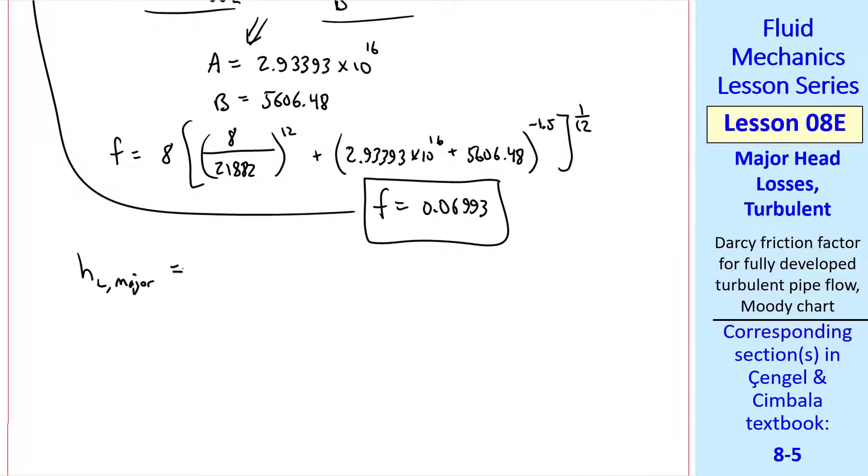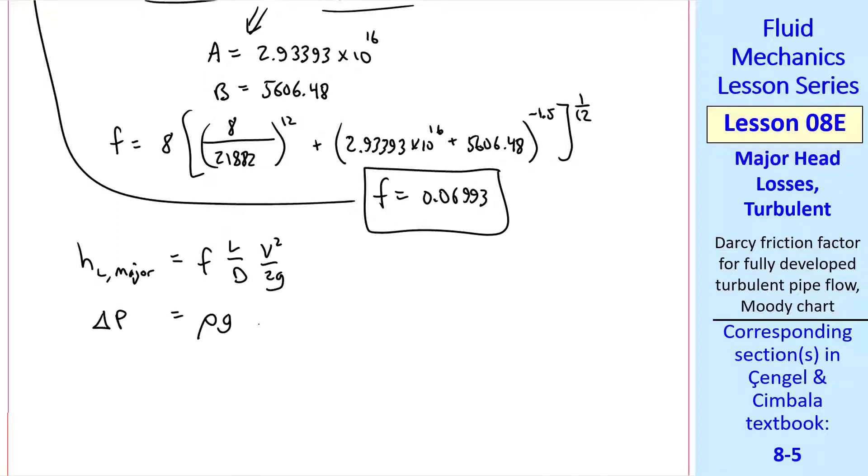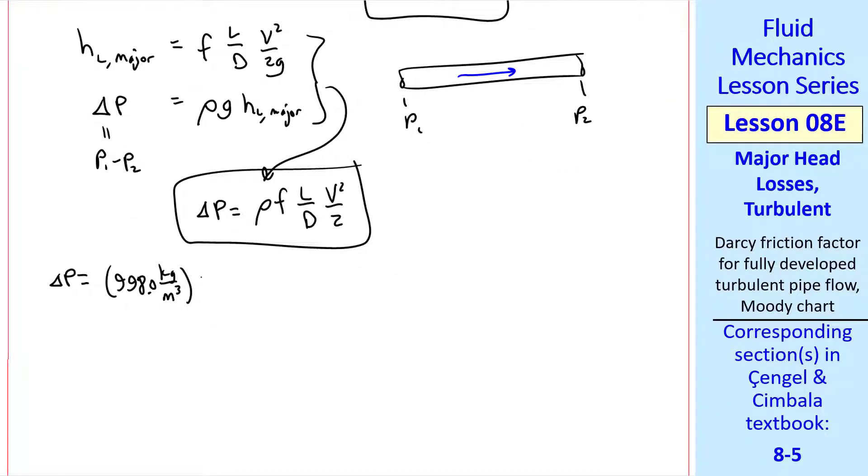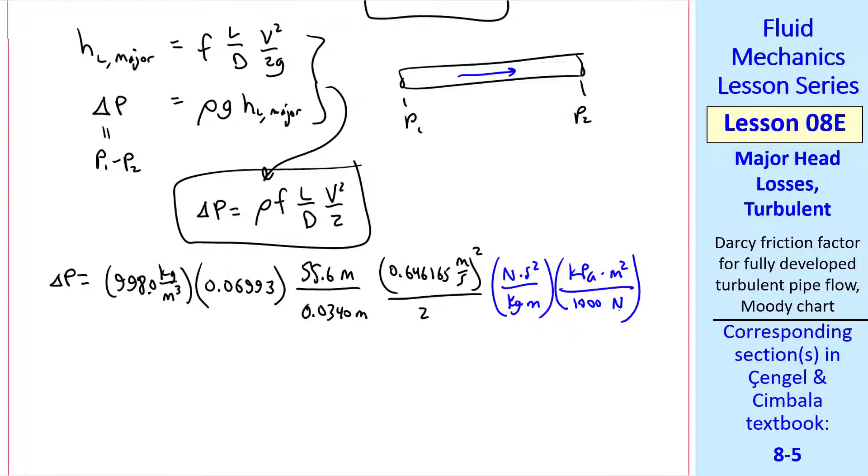In fact, the Churchill equation has now replaced the Moody chart. And as I said, make sure you can repeat these numbers before trying this on your own for a homework or quiz or exam problem. Now that we have F, we know that the major head loss is FL over D V squared over 2G and therefore the pressure difference from that head loss is rho G times HL major. We're talking about a horizontal pipe, so there's no pressure drop or rise due to elevation change. There's no pumps or anything. So this is simply the pressure drop P1 minus P2 required to push the flow through. Combining these two, the G's cancel out, and this is our answer in variable form.